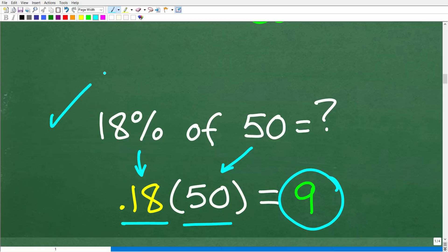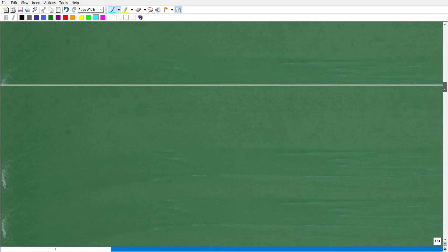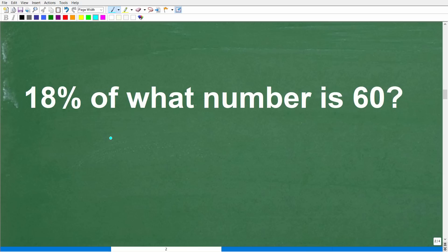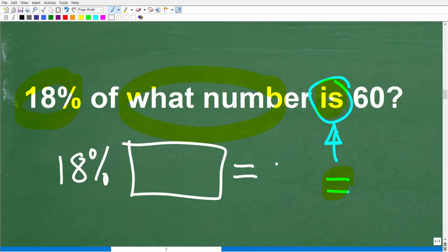Alright, now if you understand this, you'll be able to understand the algebra to solve our problem. So here is our question. So we have 18% of what number is 60? So this word in math, is, is the same thing as the equal sign. So we're going to kind of translate this verbal sentence into an algebraic equation. Alright, so 18% of some mystery number is or is equal to 60. So in other words, 18% of something is equal to 60.